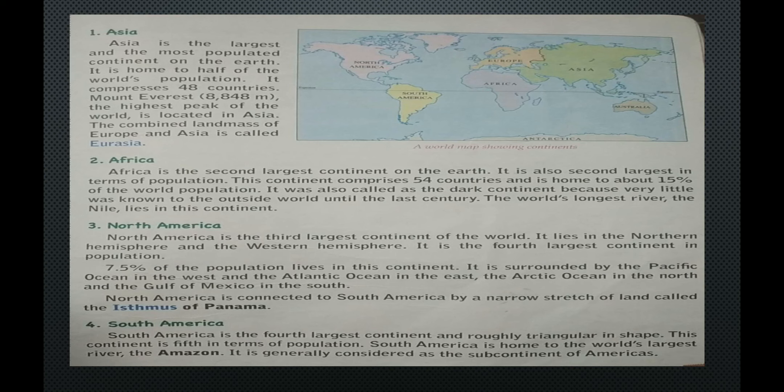Asia is the largest and most populated continent on earth. It is home to half of the world's population and comprises 48 countries. Mount Everest, the highest peak in the world at 8,848 meters, is located in Asia. The combined land masses of Europe and Asia is called Eurasia.